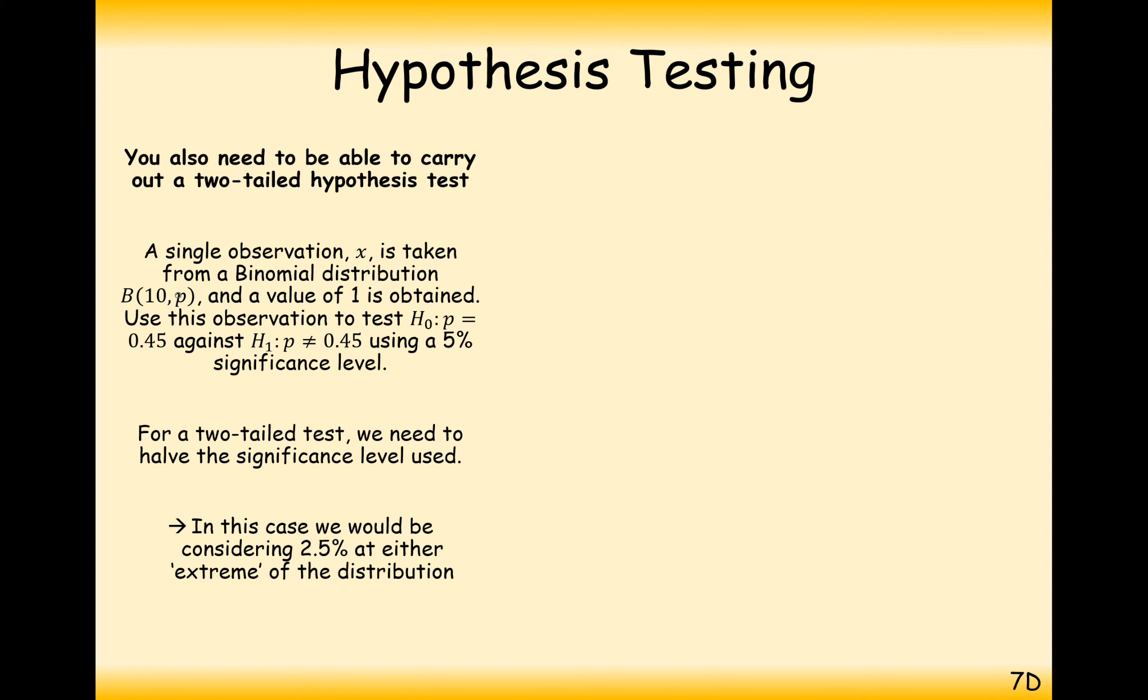Okay, so let's have a little look at a question here, then. A single observation X is taken from a binomial distribution, binomial 10 trials, and value 1 is obtained. Use this information to test the null hypothesis that P is equal to 0.45, against the alternative hypothesis, which is that P is now not 0.45, using a 5% significance level. So for a two-tailed test, what we're going to have to consider here is the 2.5% significance level at both extremes of the probability scale. So, just writing out all of the key pieces of information here, and then having a look at our graph.